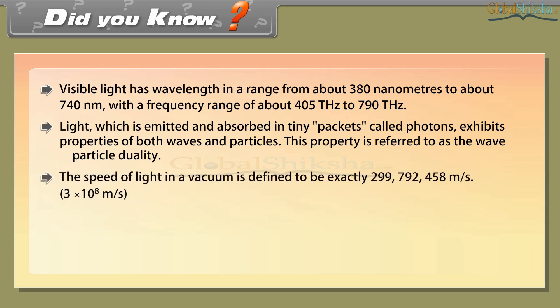The speed of light in a vacuum is defined to be exactly 29 crores, 97 lakhs, 92 thousand, 458 meter per second, that is 3 into 10 raised to the power 8 meter per second.